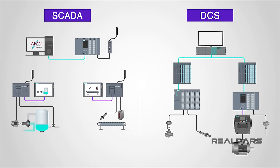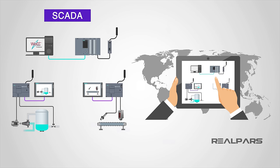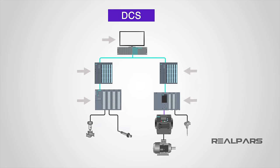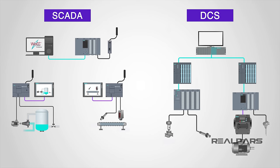As you have previously learned, a SCADA system is a collection of both software and hardware components that allow supervision and control of plants, both locally and remotely. A DCS is also a collection of components used for the same purpose. These similarities may lead you to ask: are they essentially the same? To answer that question, let's look back to the fundamentals of both systems.